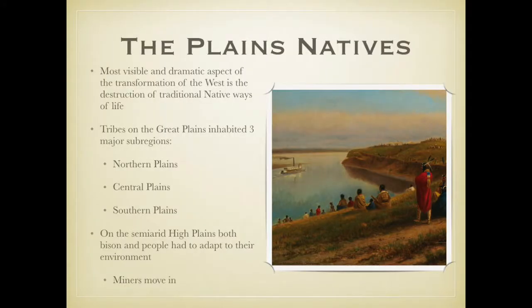The most visible and dramatic aspect of the transformation of the Western territories is the destruction of the traditional Native ways of life. These methods had dominated the Western territories because those were the people who lived there. Change began even before the mid-century influx of white settlers. During the mid-19th century the tribes did resist, but by the 1890s confinement on reservations was the ultimate fate for nearly every tribe in the Western territories.